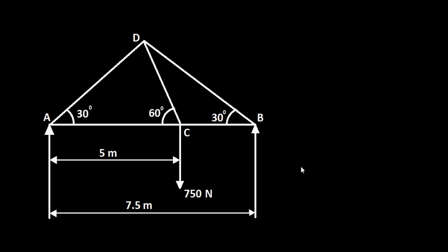Go through support reactions, forces, and moments. What you have got here is a truss which is supported at A and B, and is acted upon by a load of 750 Newton at joint C. Angle DCA is 60 degrees, angle DBC is 30 degrees, so the angles are given. The length of member AC is 5 meters, CB is 2.5 meters — you can calculate that from the other dimensions shown here, it's 7.5.